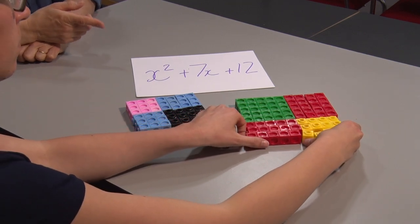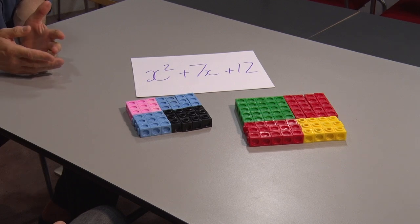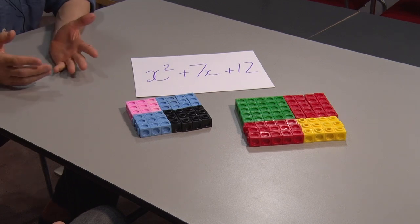So do you think we can arrange an x squared, 7 x's, and 12 to make similar rectangles, whatever the base is?